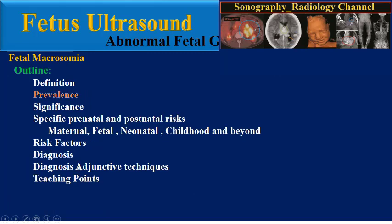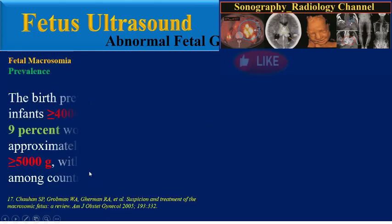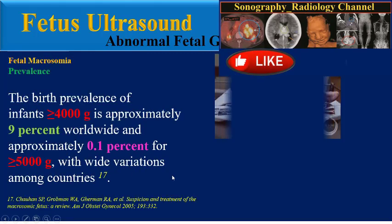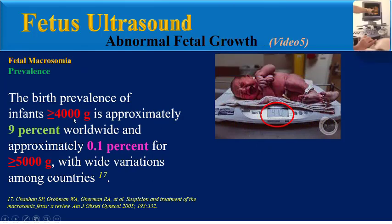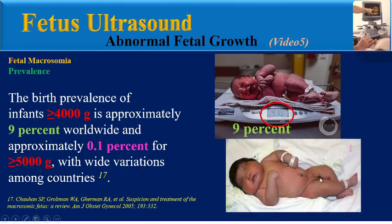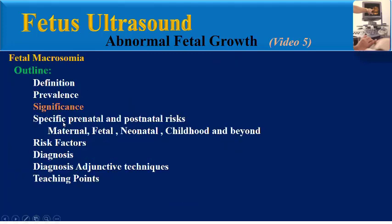The prevalence of fetal macrosomia: The birth prevalence of infants more than 4,000 grams is approximately 9% worldwide, and approximately 0.1% for fetuses more than 5,000 grams, with wide variation among countries.